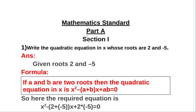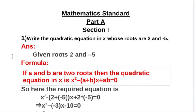Mathematics Standard Part A, Section 1. Question number one: Write the quadratic equation in x whose roots are 2 and minus 5. So we find the quadratic equation. The answer is this. Here given roots are 2 and minus 5.